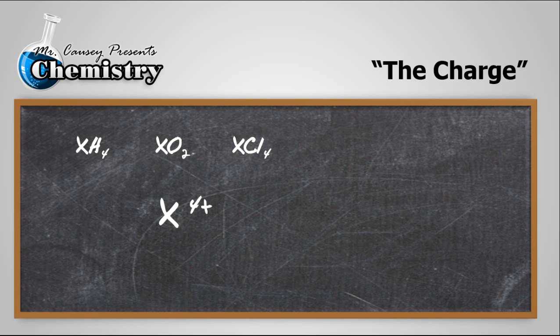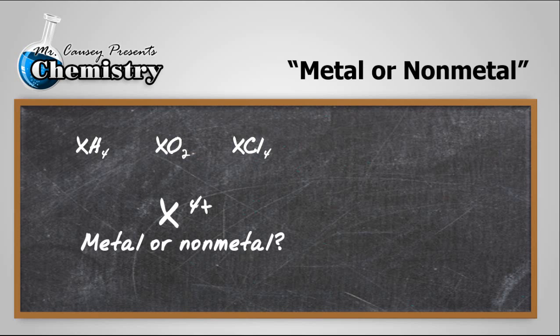Now the question is: is it a metal or a nonmetal? Well, hydrogen here is combined with X, and hydrogen is the anion. If hydrogen is an anion, that means it is combining or bonding with a metal. Therefore, element X is a metal.